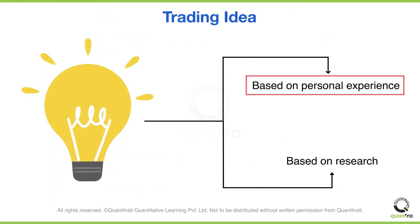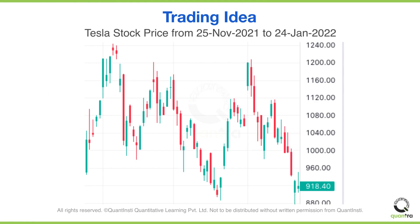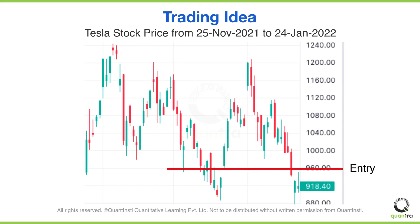John chose the first approach and decided to trade based on his own experience in the market. He's been tracking the Tesla stock for a while and noticed that during the period of 25 November 2021 to 24 January 2022, the stock had been moving within a range of $960 to $1160. So he comes up with a simple strategy: he will enter a long position at $960 and exit at $1160.